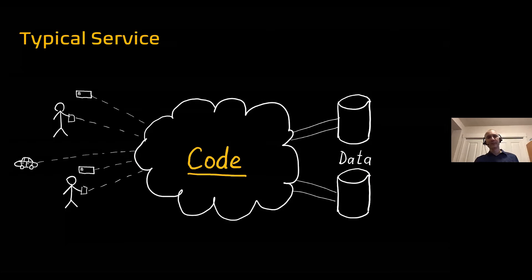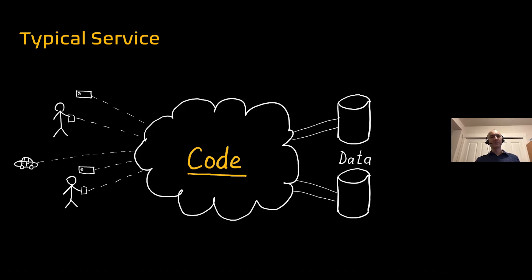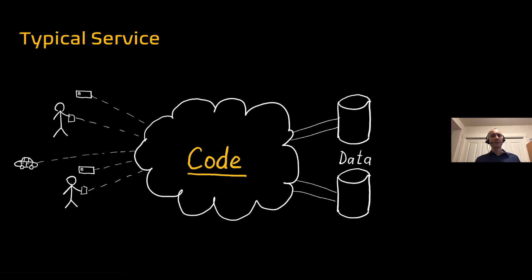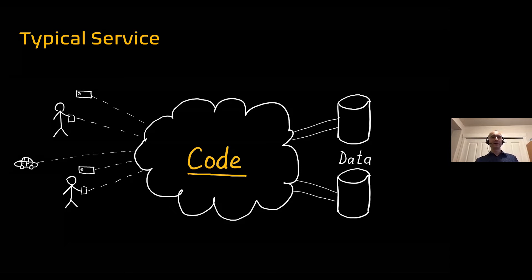If we look at a typical cloud service from very high altitude — let's say from the Stratosphere — we're looking down. The service has a bunch of users: humans using mobile phones or computers, other devices, gaming consoles, IoT devices, or vehicles that do navigation or report telemetry. They connect through HTTP, gRPC, MQTT, whatever protocol you use, and there's always data in a database somewhere.